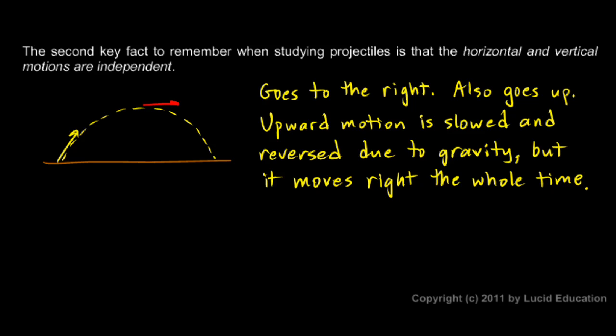It doesn't pull this object forward or backward at all. Gravity only pulls down. So gravity only affects the vertical motion—it slows the upward motion and pulls it back down—but it doesn't affect the horizontal motion at all.